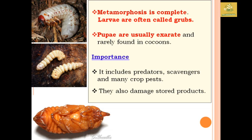Metamorphosis is complete, where the larva is called a grub. The pupa is of the exarate type and is rarely found in a cocoon. In terms of importance, they are mainly predators as well as scavengers, and in many crop pests they also damage stored products in storehouses.